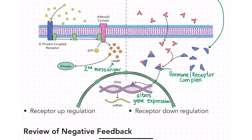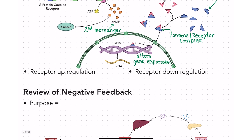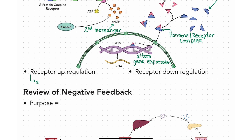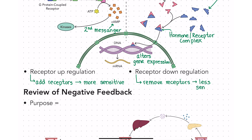The target cell itself also has some say in this regulatory process. Cells can influence how sensitive they are to a specific hormone by either up-regulating or down-regulating their receptors. When a cell up-regulates its receptor, it is making more of that receptor, making the cell more sensitive to the hormone that binds to it. Cells can also down-regulate their receptors, making them unavailable to the hormones and therefore making the cell less sensitive to that specific hormone.